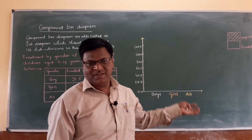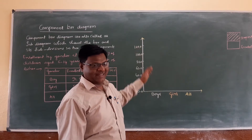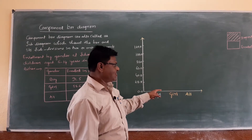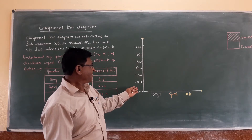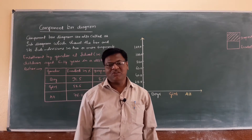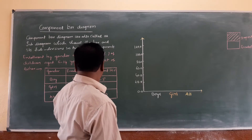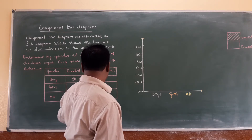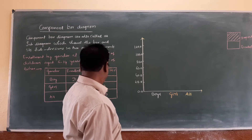First, you draw the OX axis and Y vertical lines. The X horizontal axis measures boys, girls, and all. The Y vertical axis measures the percentage of dropout and enrolled in school. You need to show what percentage is enrolled and what percentage is dropout for boys, girls, and all.